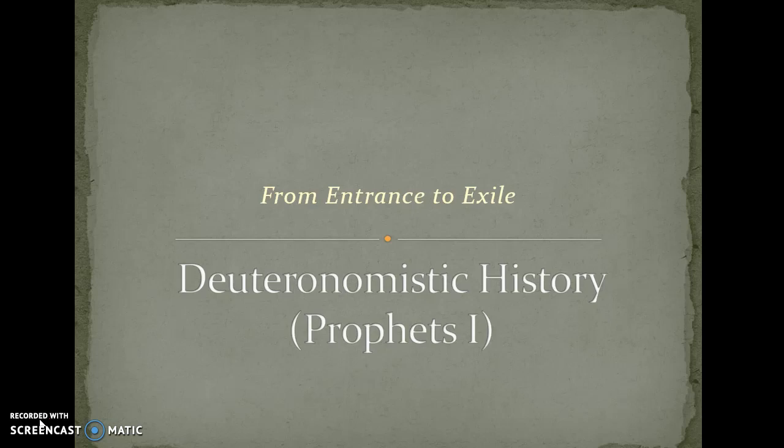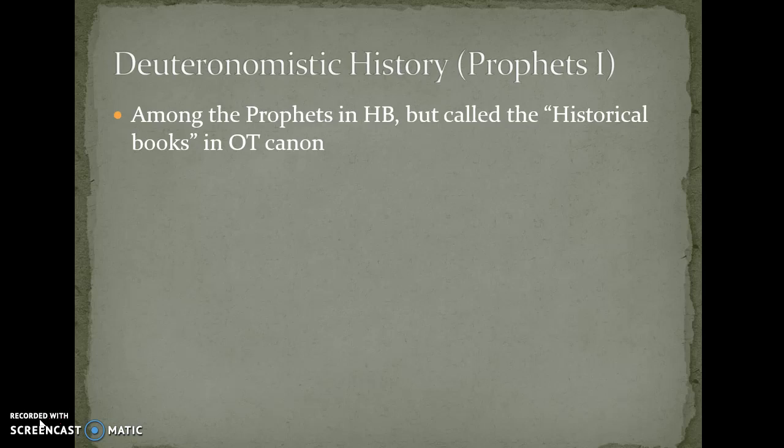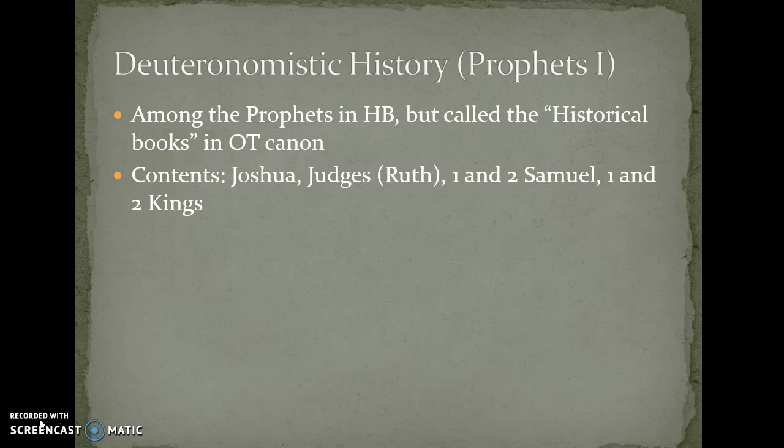When we're looking at the Deuteronomistic history, we're looking at certain texts. These are among the prophets in the Hebrew Bible, but they're called the historical books in the Christian Old Testament canon. These are the books of Joshua, Judges, Ruth, 1 and 2 Samuel, and 1 and 2 Kings. Ruth is not among these in the Hebrew Bible but is held until the end in the writings, though she's placed chronologically between Judges and 1 Samuel in the Christian Old Testament.